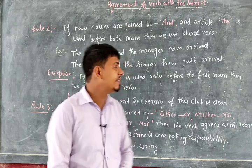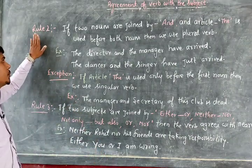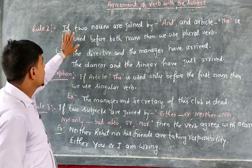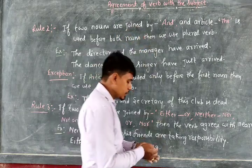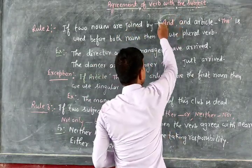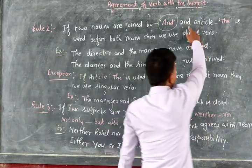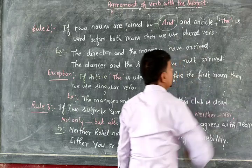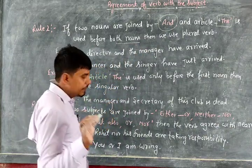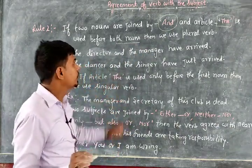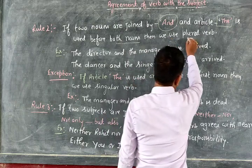Let's see the further concept related to subject-verb agreement — concept number two. If two nouns are joined by the conjunction 'and' and the article 'the' is used before both nouns, then in that situation we will use a plural verb.